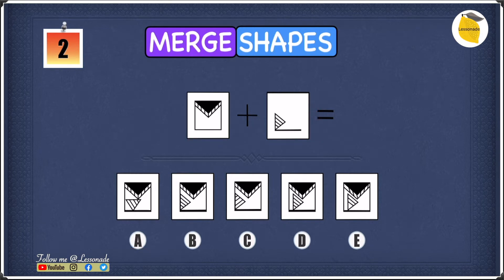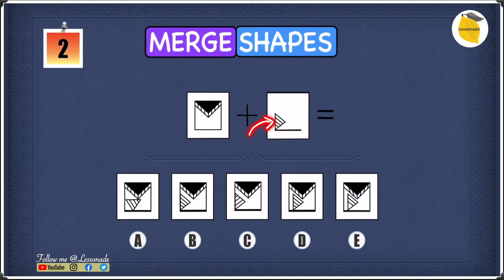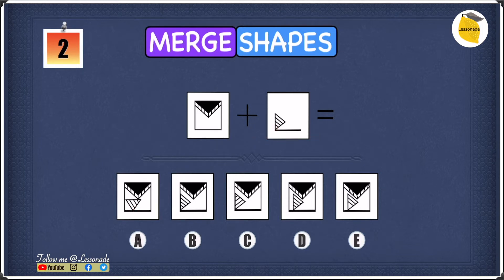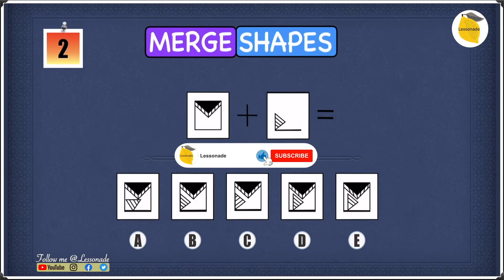In A, let's start with shape 1. We have the square on the outside, the triangle on the inside shaded in black, and on top of it the stripy pattern — everything in shape 1 checks out. Moving to shape 2, we have the horizontal line, but the triangle is pointing downwards and is towards the middle of the line, whereas in shape 2 the triangle points to the right and is towards the end of the line. Because the triangle is in the wrong direction and the wrong place, we can cross off A.